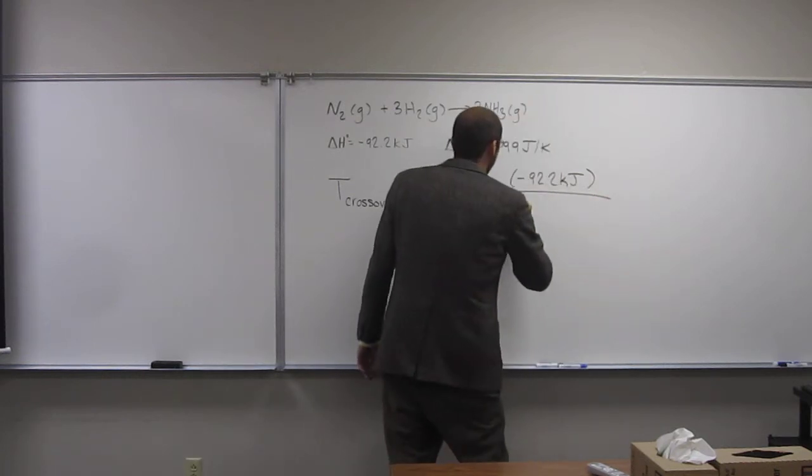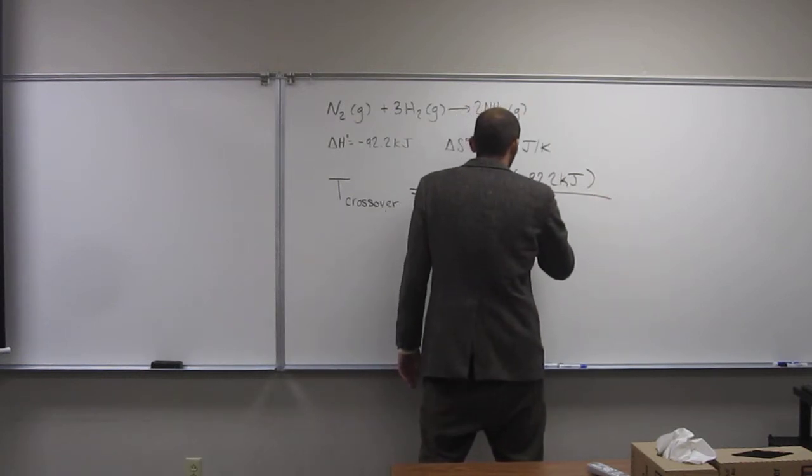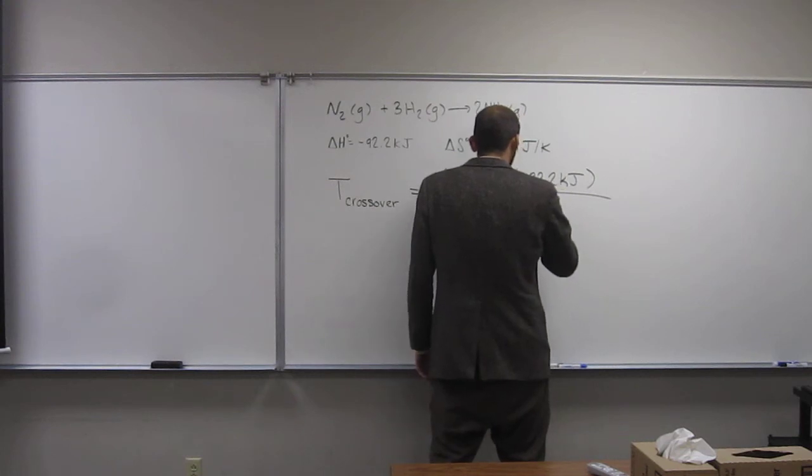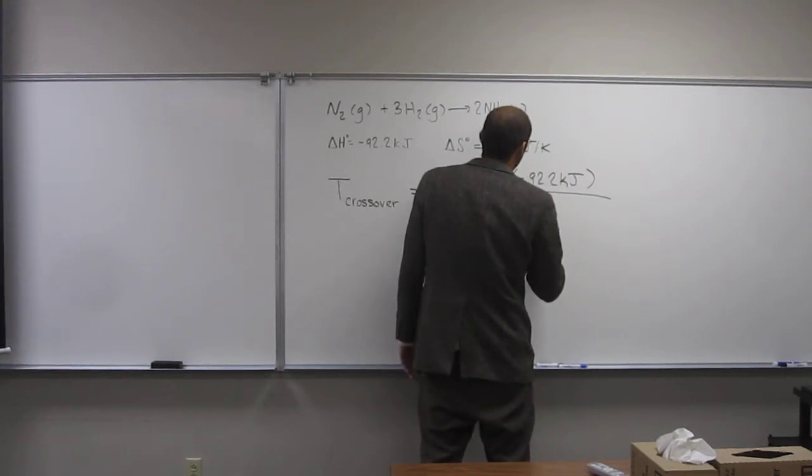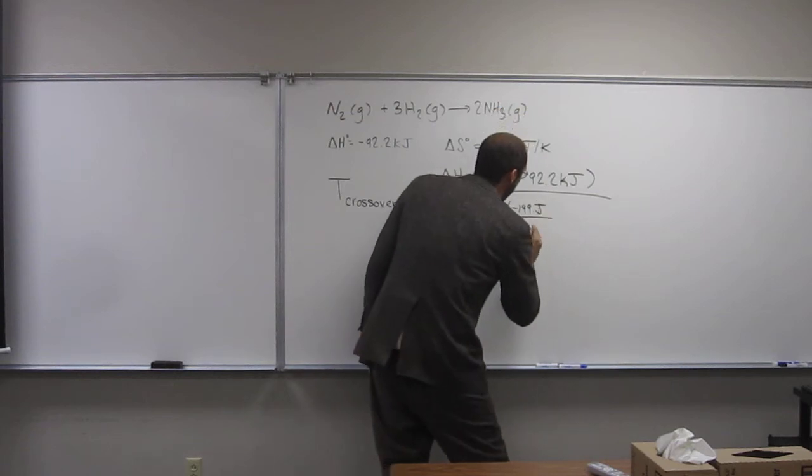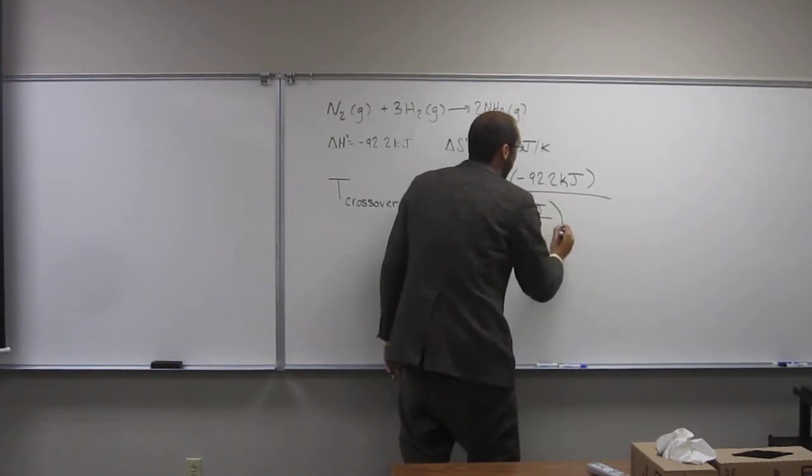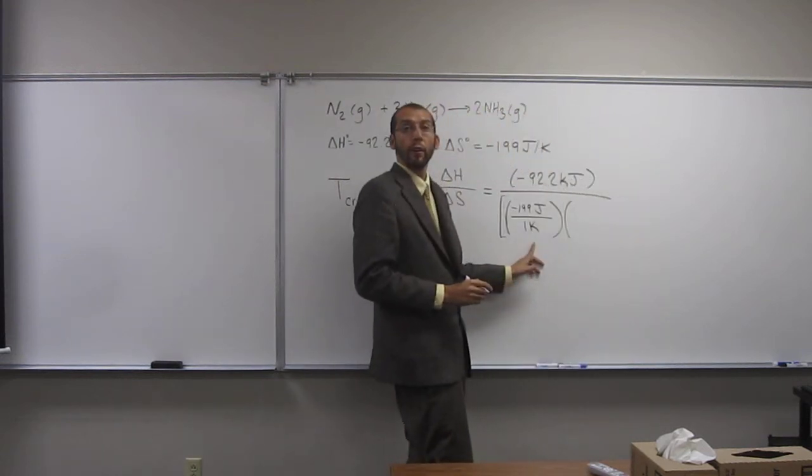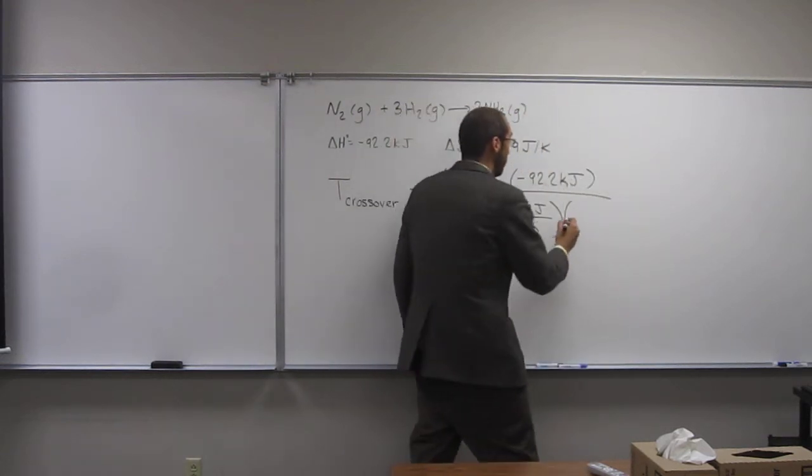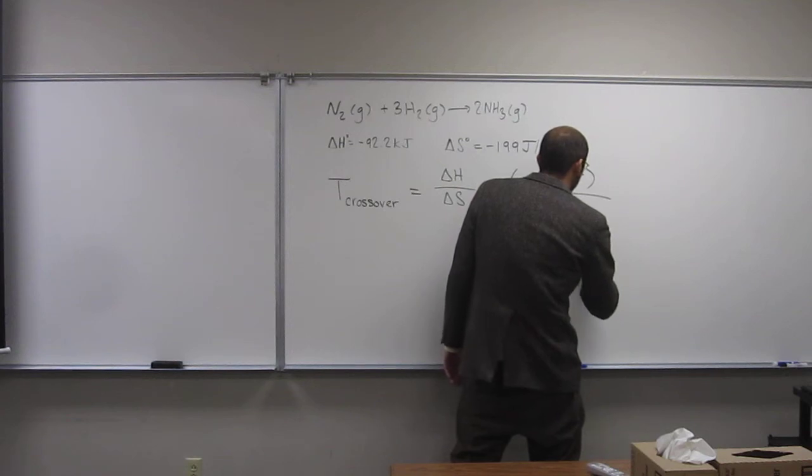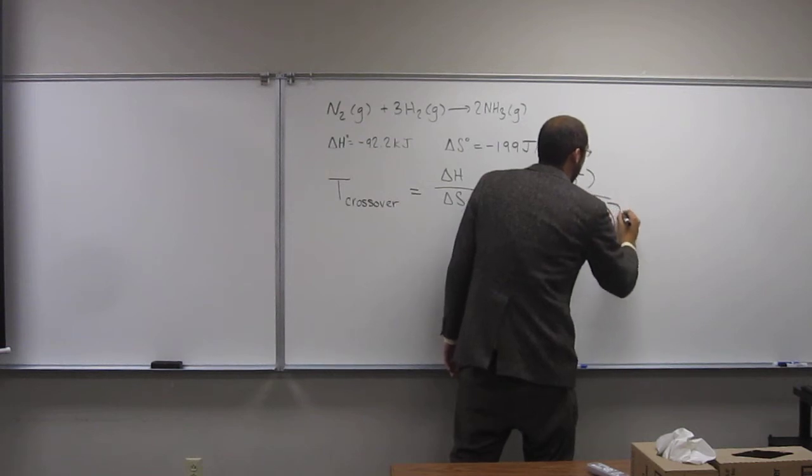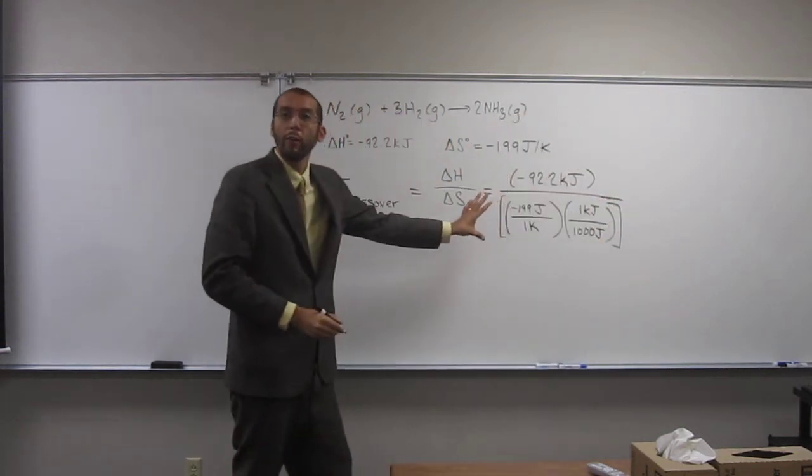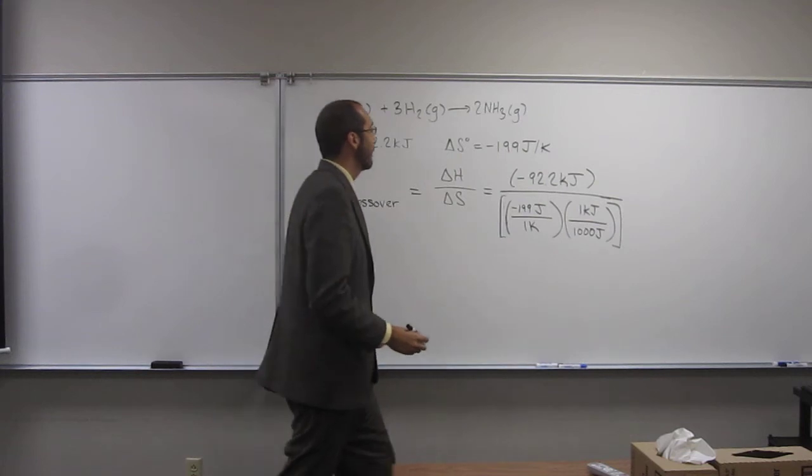And then I divide that by negative 199 joules per one kelvin. And then again, like I said, I want to convert that to kilojoules. So 1,000 joules, one kilojoules. Is everybody okay with me doing that? Okay, wonderful. Let's cancel out our units.